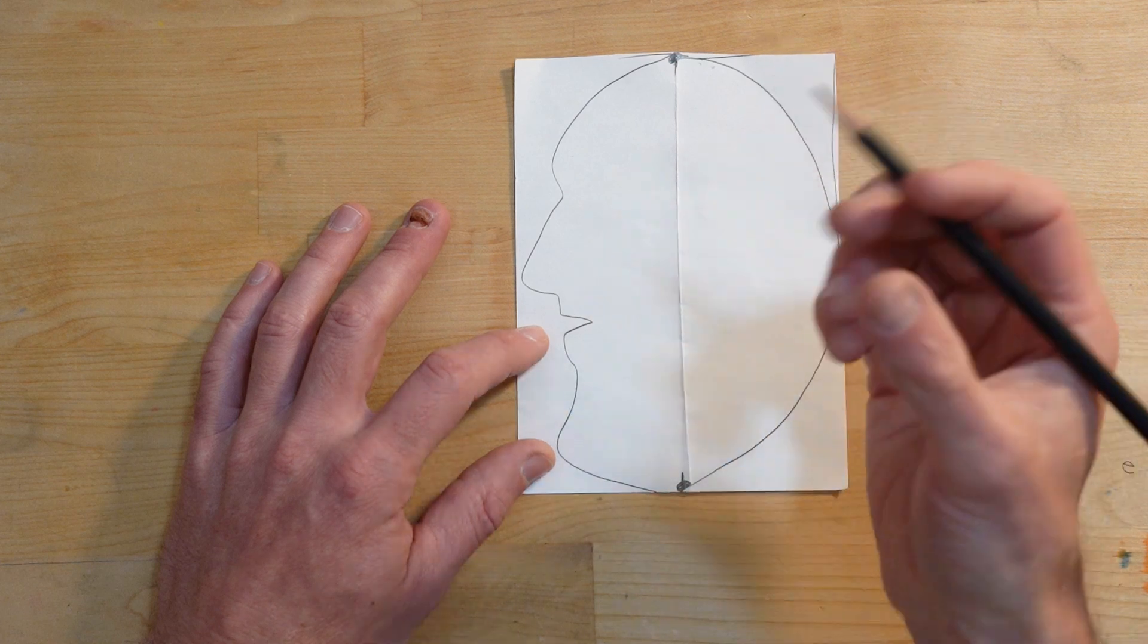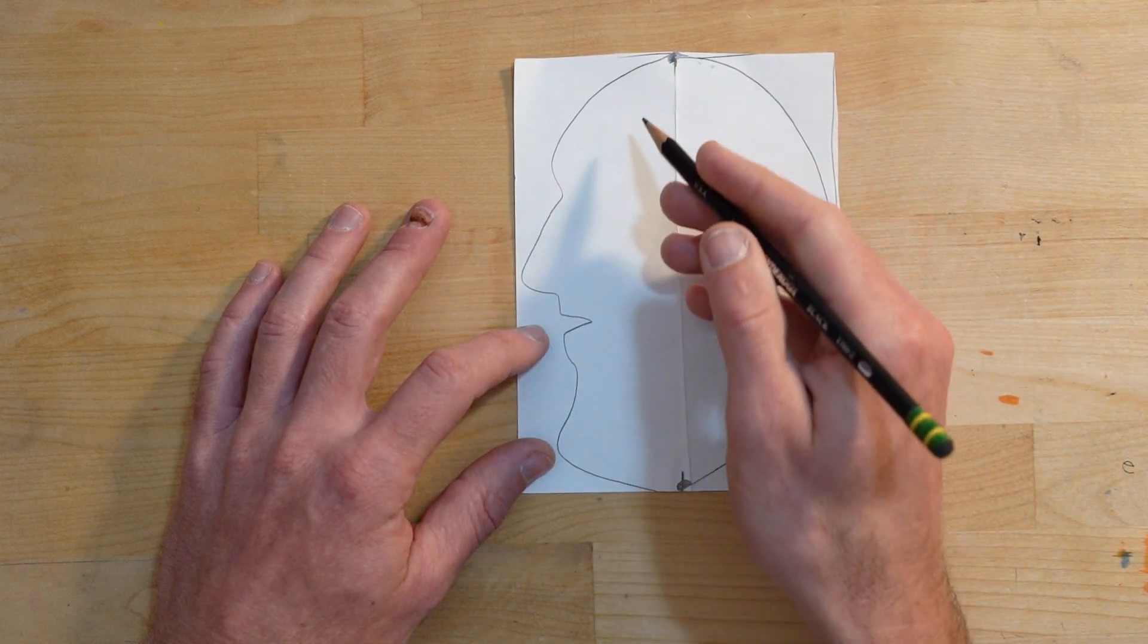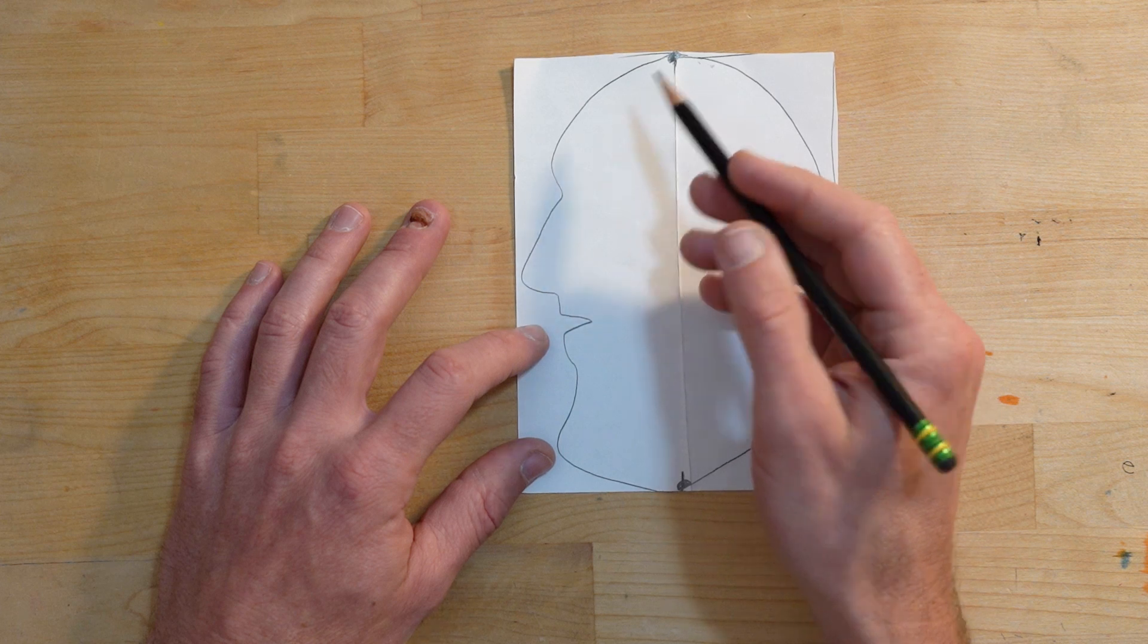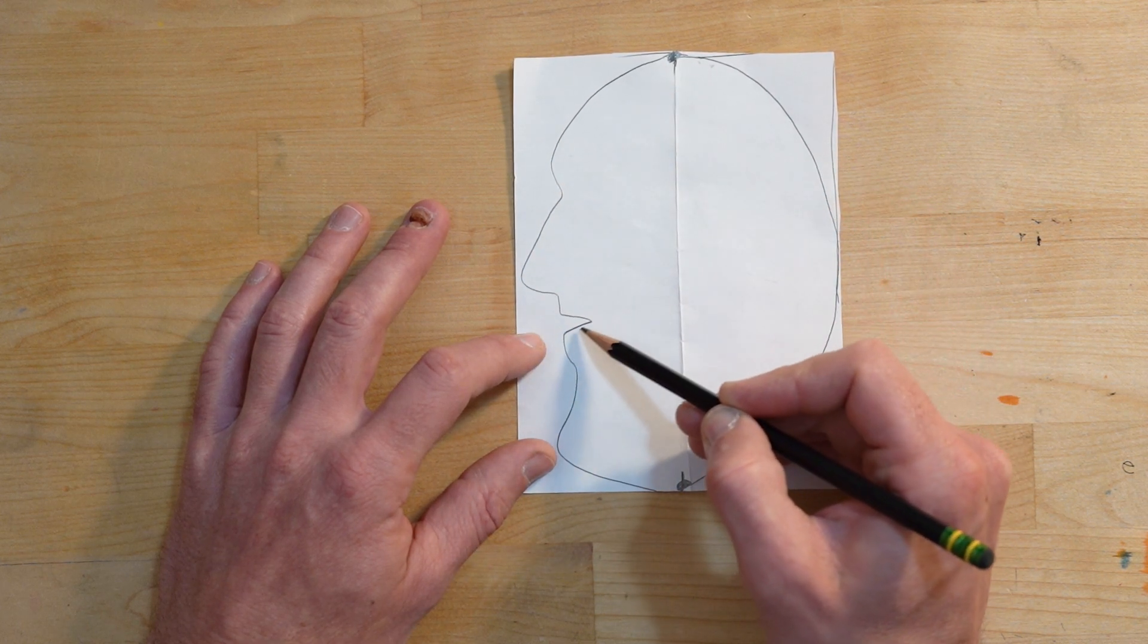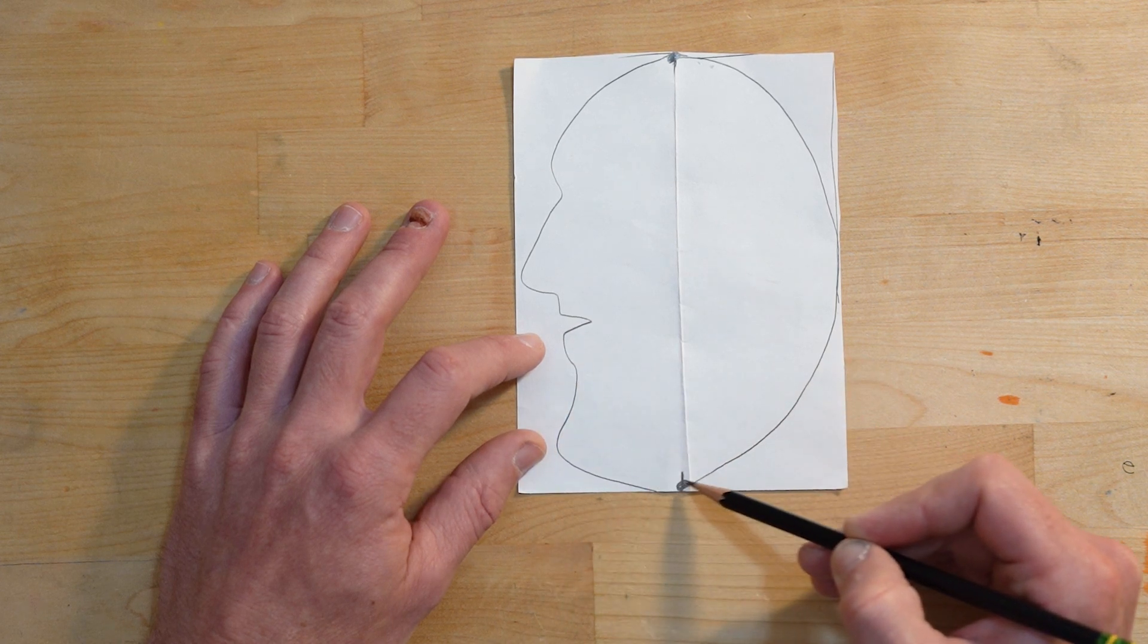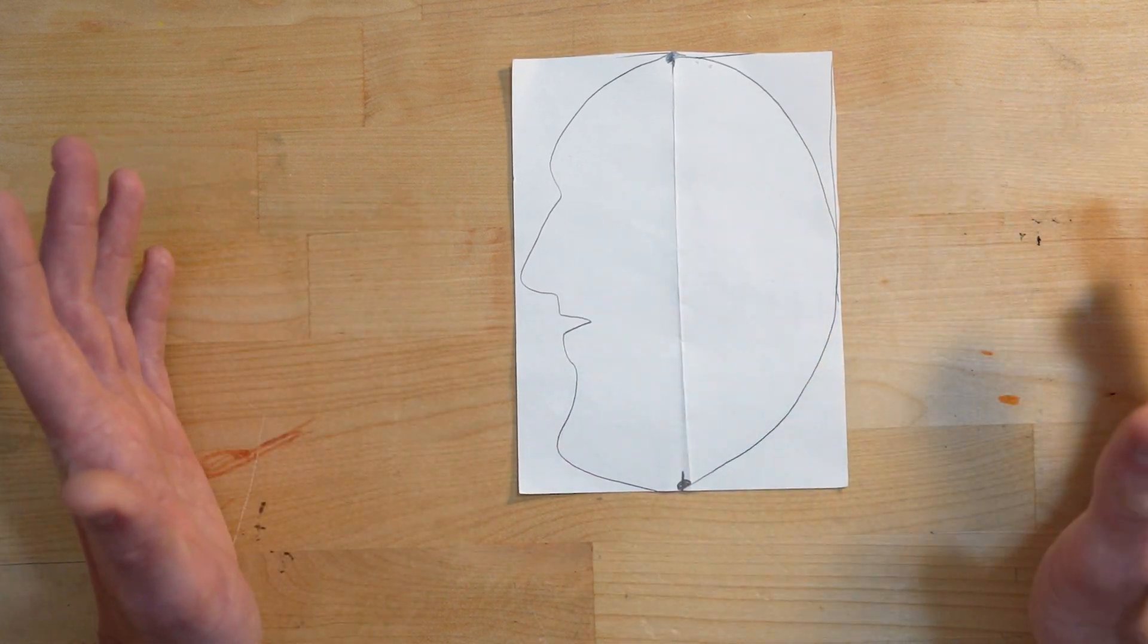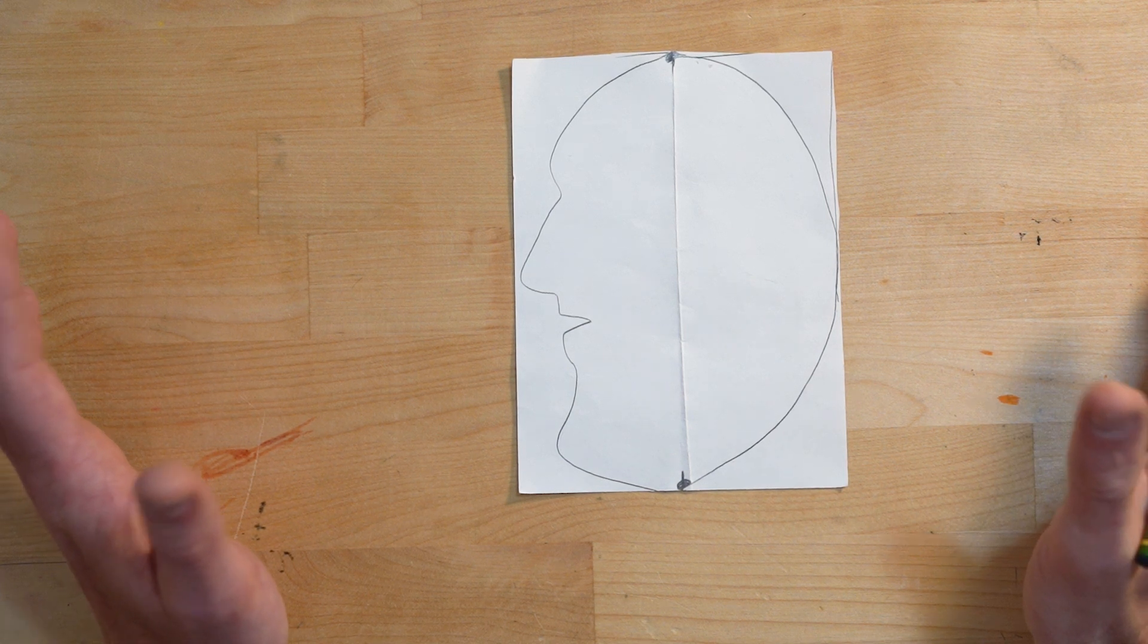You might want to look at your neighbor, have the kids look across. Have somebody turn to the side. What do you see? A little forehead, nose, maybe a mouth, a little chin, back of the head. That's pretty much all we're looking for.